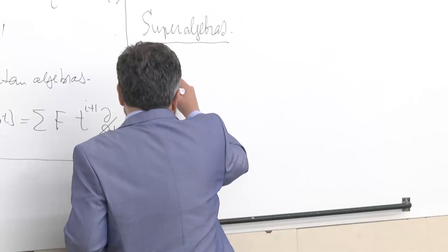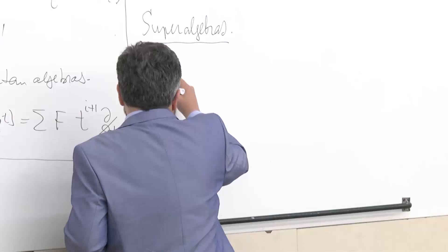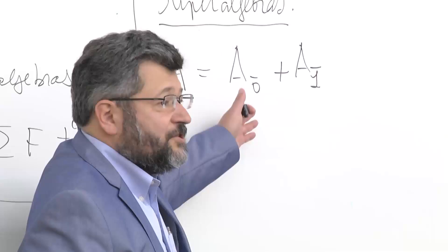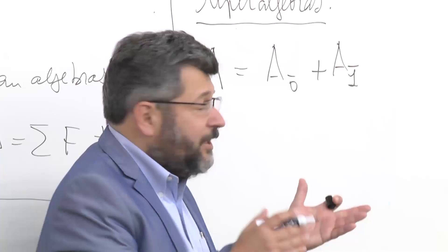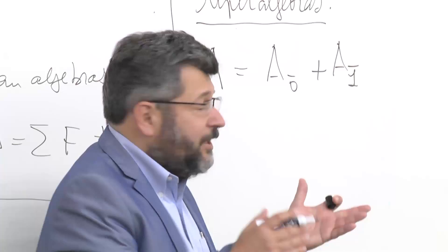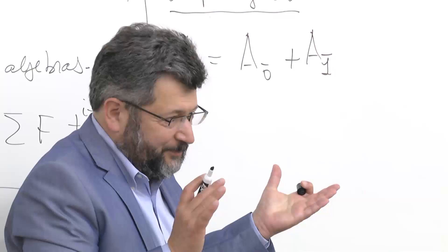So what are superalgebras? Let A be an algebra, and suppose that it is graded by a cyclic group of order 2. So it is a direct sum of two subspaces. The first is the even subspace; the second is the odd subspace. Whenever you multiply two even elements you get an even element; even times odd is odd; the product of two odd elements is even. That's it — this is a superalgebra.